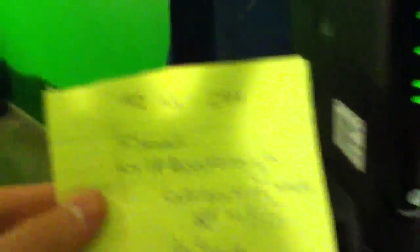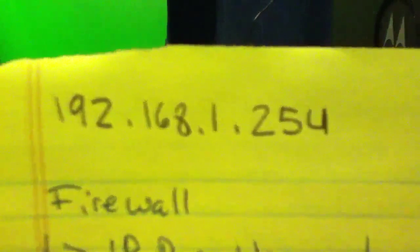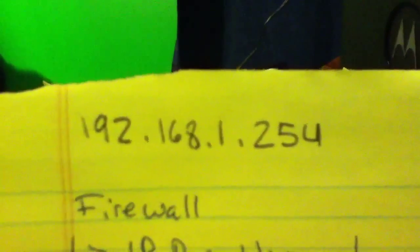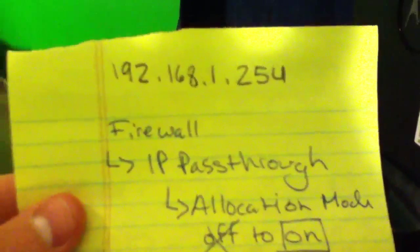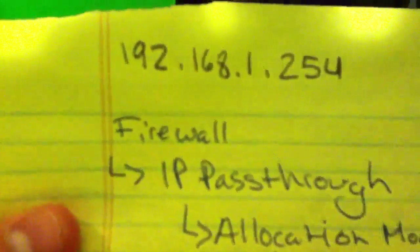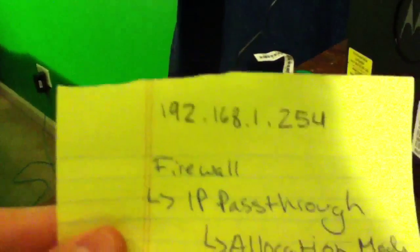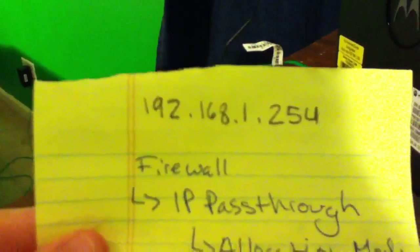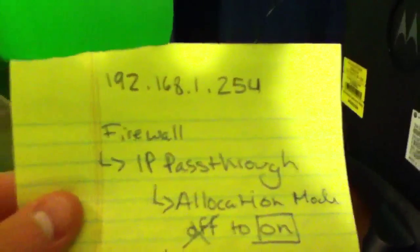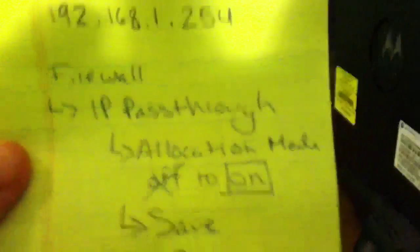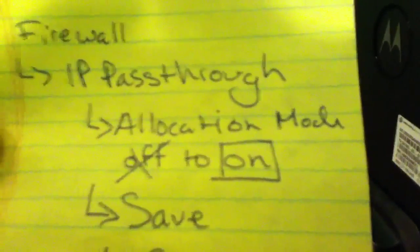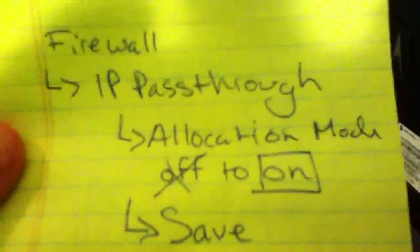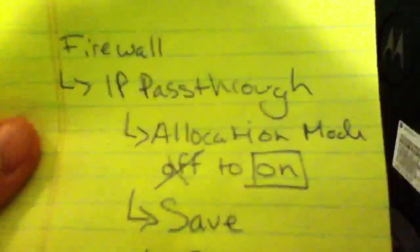First, you are going to type into your browser this right here: 192.168.1.254. When you do that, you're going to go onto the Firewall heading — there's going to be a bunch of categories on the top. You're going to click Firewall. Under Firewall, there's going to be a subcategory called IP Passthrough. You click on that, you're going to see Allocation Mode. If it says off, that's most likely why — if not the exact reason why — you have strict or moderate.